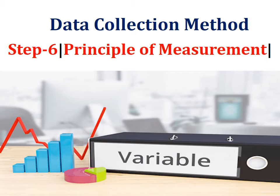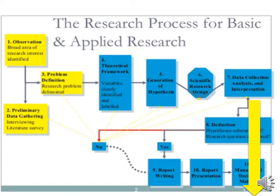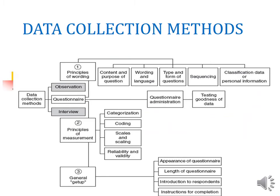Bismillahirrahmanirrahim. Dear students and viewers, today we discuss data collection methods — Step 6, the principles of measurement in the research process. The basic and applied research have 11 steps; data collection method is the seventh step. The data collection methods framework consists of three main principles.